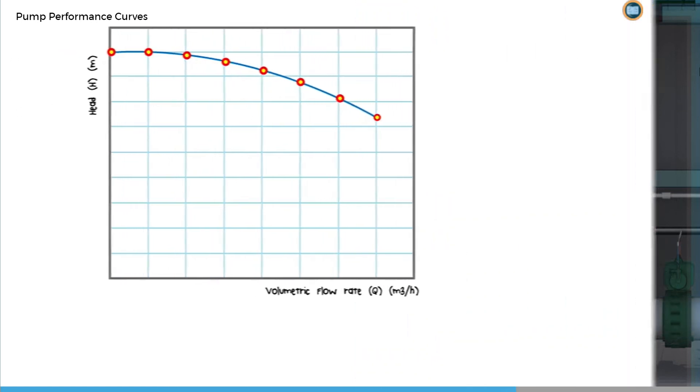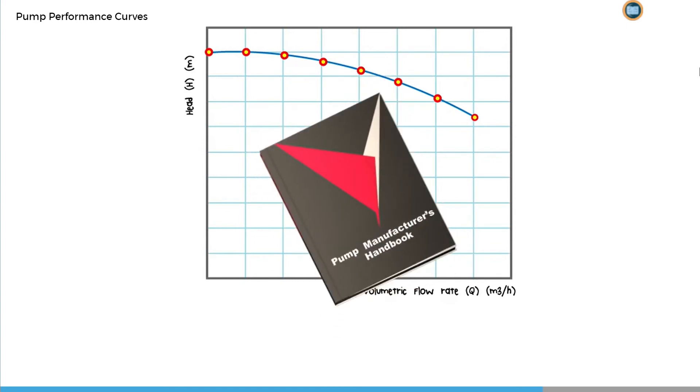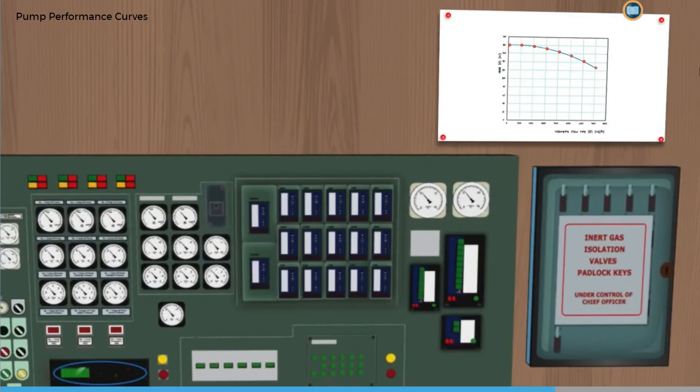The result plotted on the graph is known as a pump performance curve, or sometimes an HQ curve. You will see this in the pump manufacturer's handbook, and they will often be posted in the cargo control room.